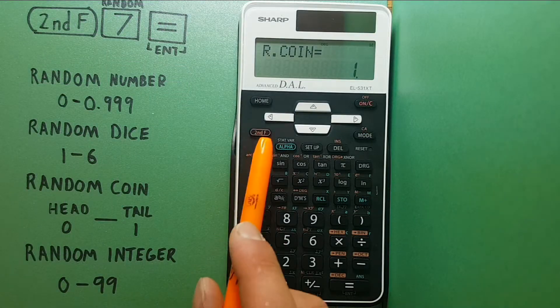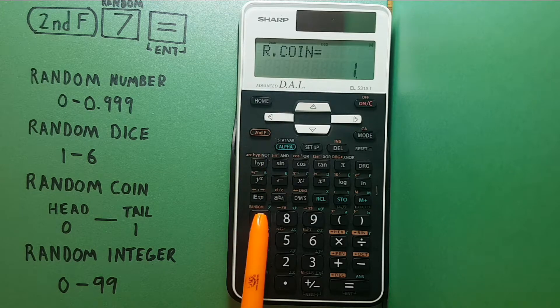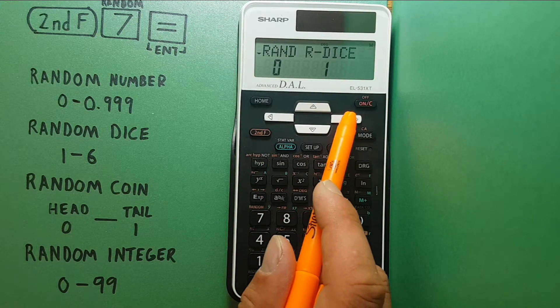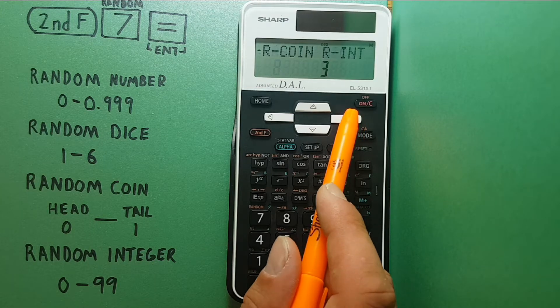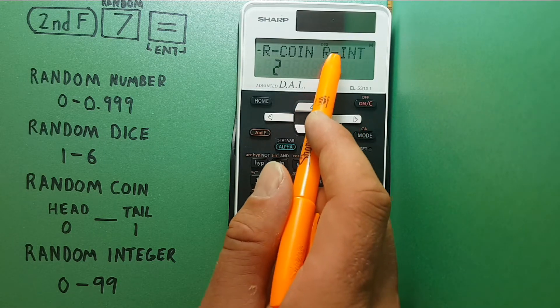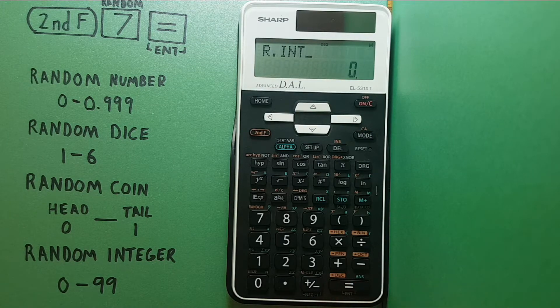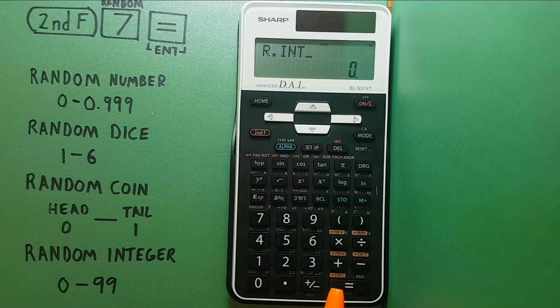Alright, let's look at the last option, the random integer. So this time we'll go to the right one, two, three times, r int. We'll select it with equals and let's try it.